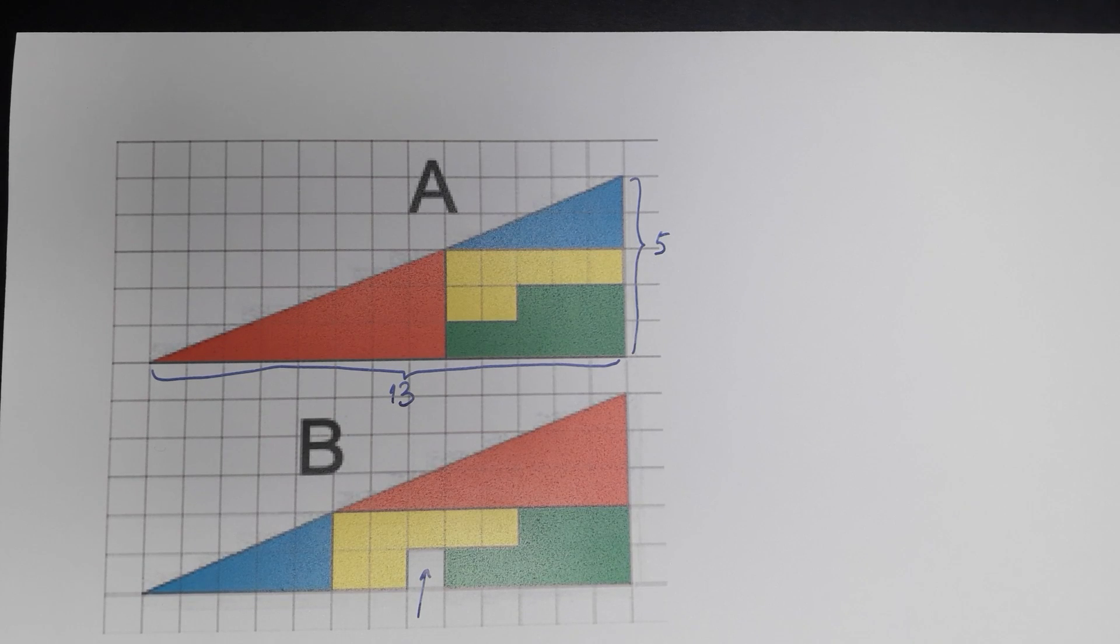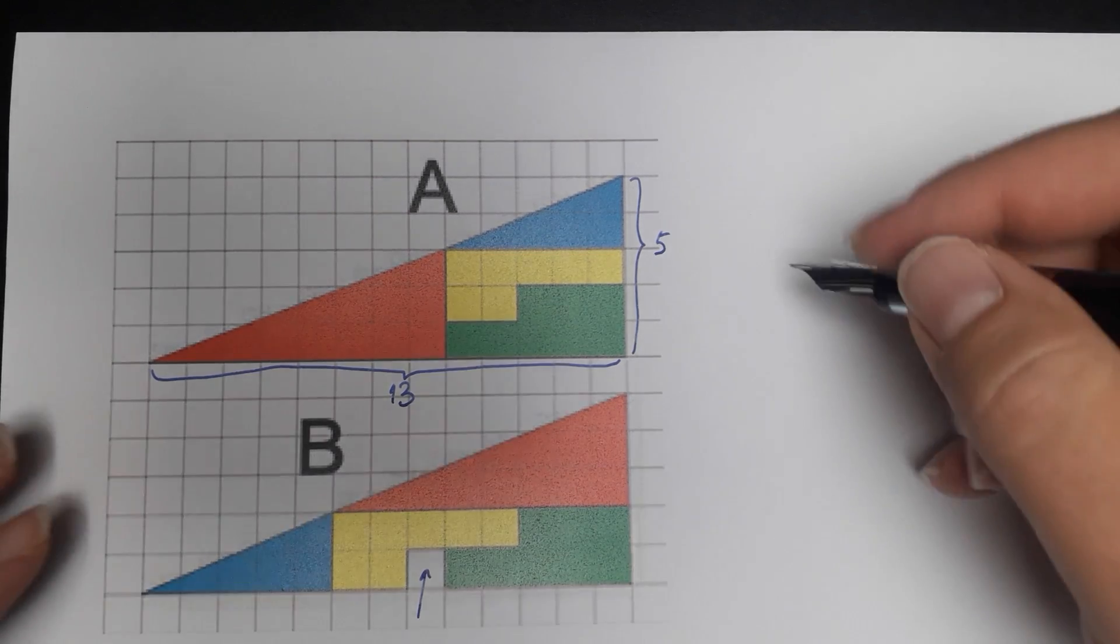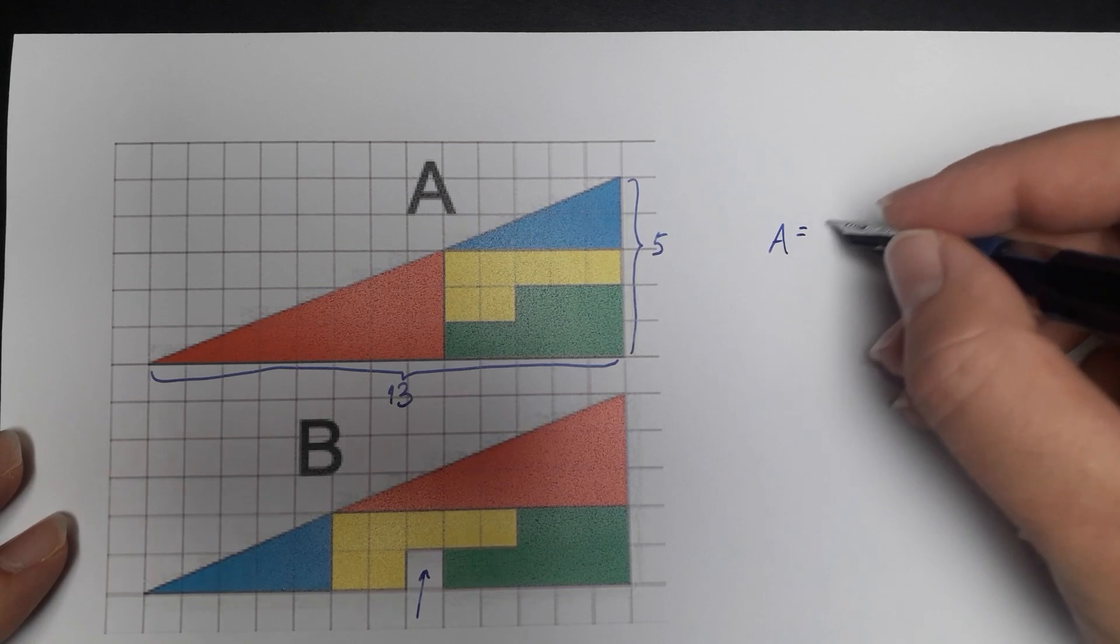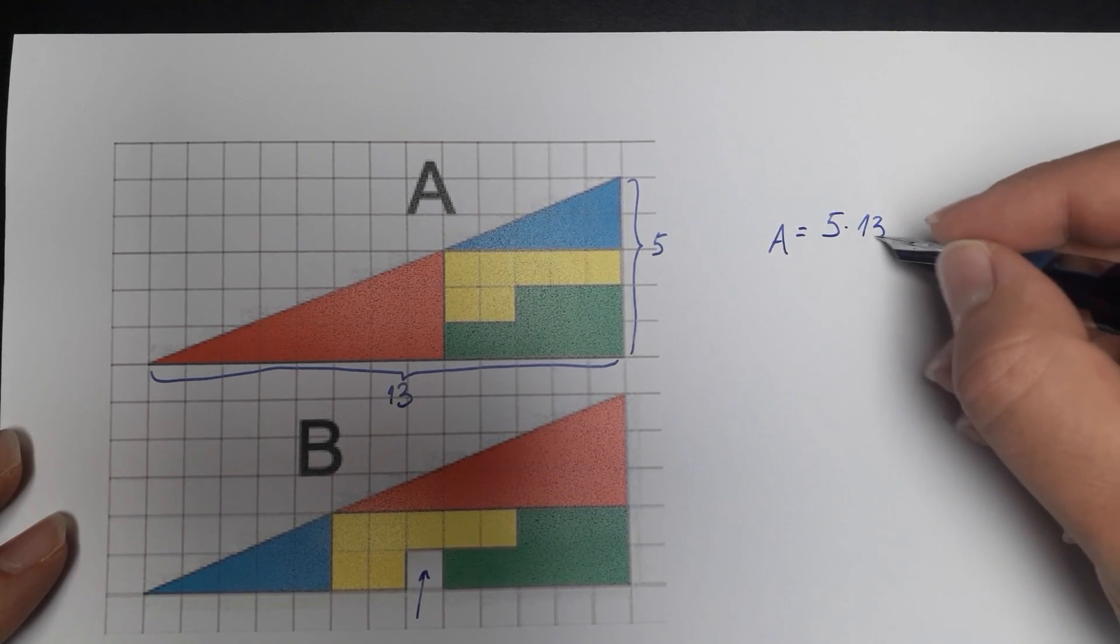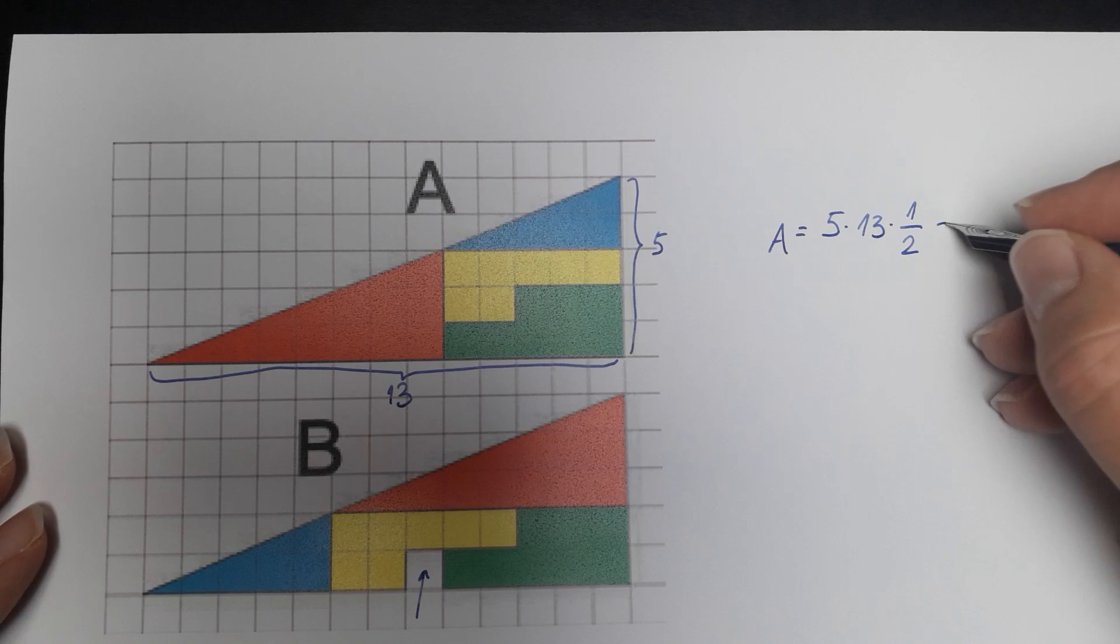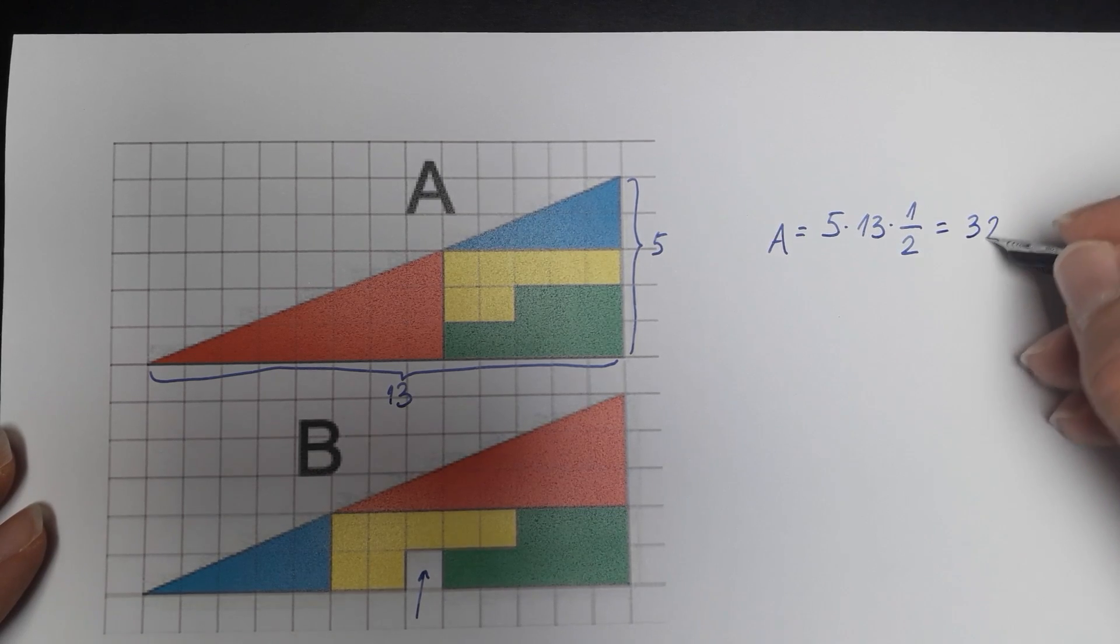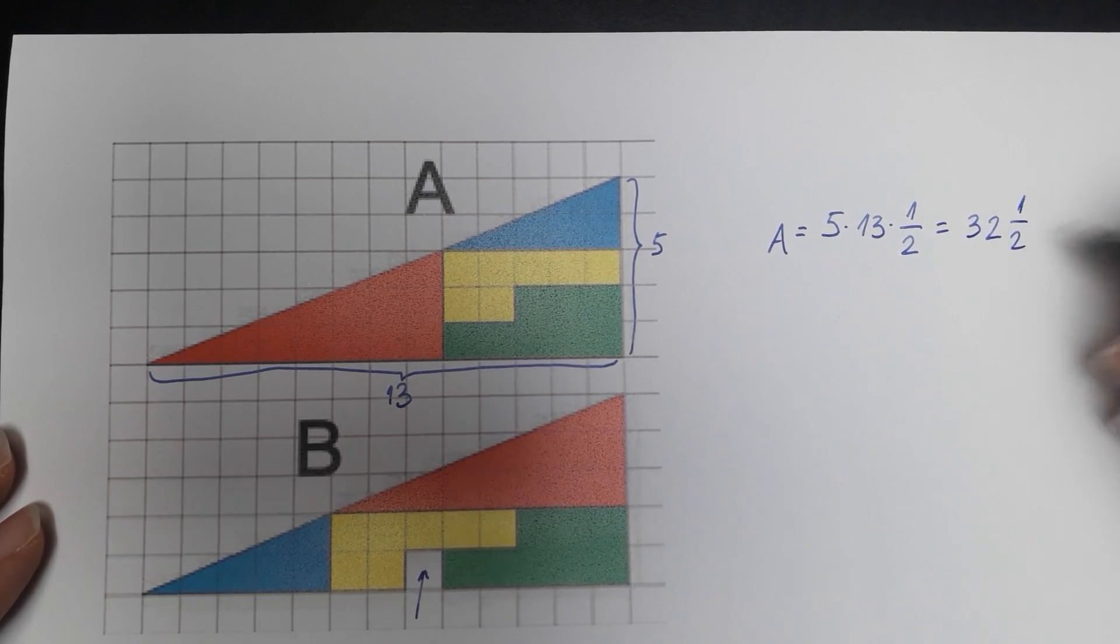The area of triangle A is going to be A equals 5 times 13 divided by 2. That is equal to 32 units and one half of a unit.